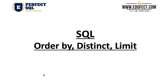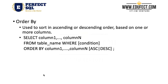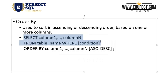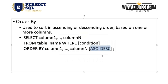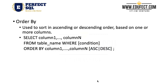In this lesson, we will learn about OrderBy, Distinct and Limit. Let's start with OrderBy. OrderBy is used to sort in ascending or descending order. Based on the columns that we have specified, we can sort the data being fetched. We can add OrderBy at the end of a query and specify the columns by which we want to order, then specify ascending or descending. This is the syntax for OrderBy.